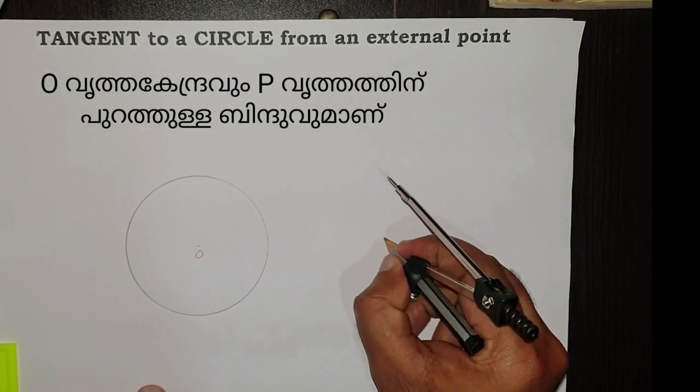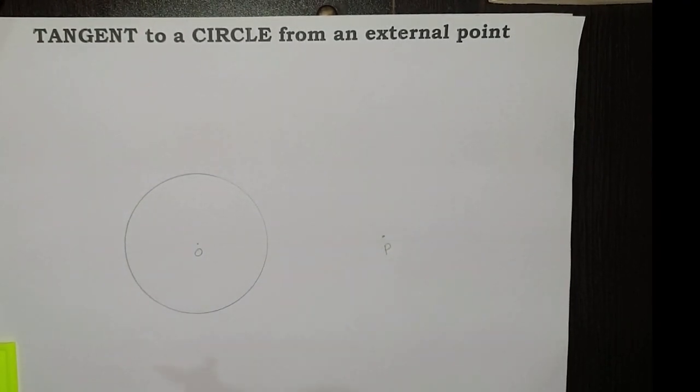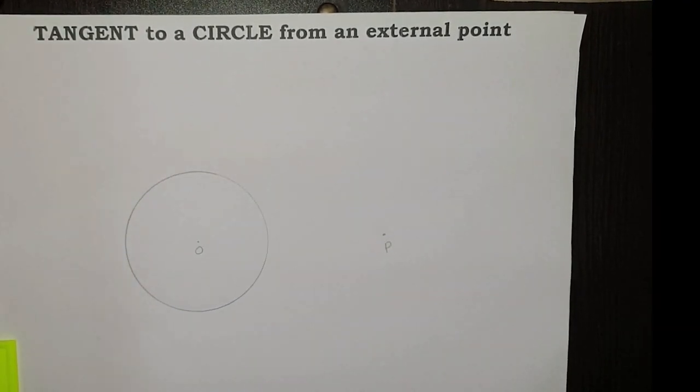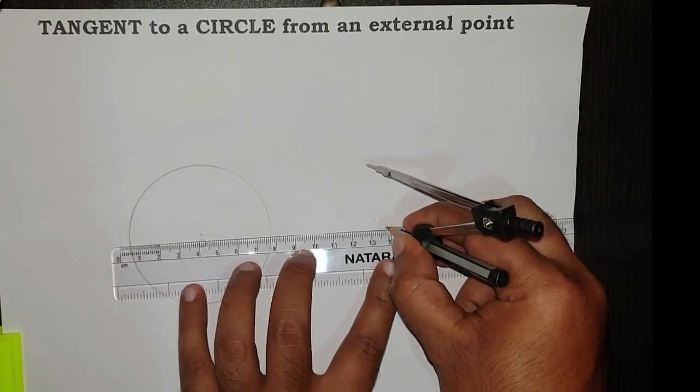Here, I take another point, say P, which is an external point of the circle. Now, we draw a line segment from P to O.